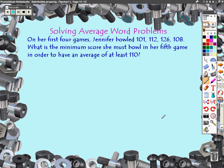On her first four games, Jennifer bowled 101, 112, 126, and 108. What is the minimum score she must bowl in her fifth game in order to have an average of at least 110?